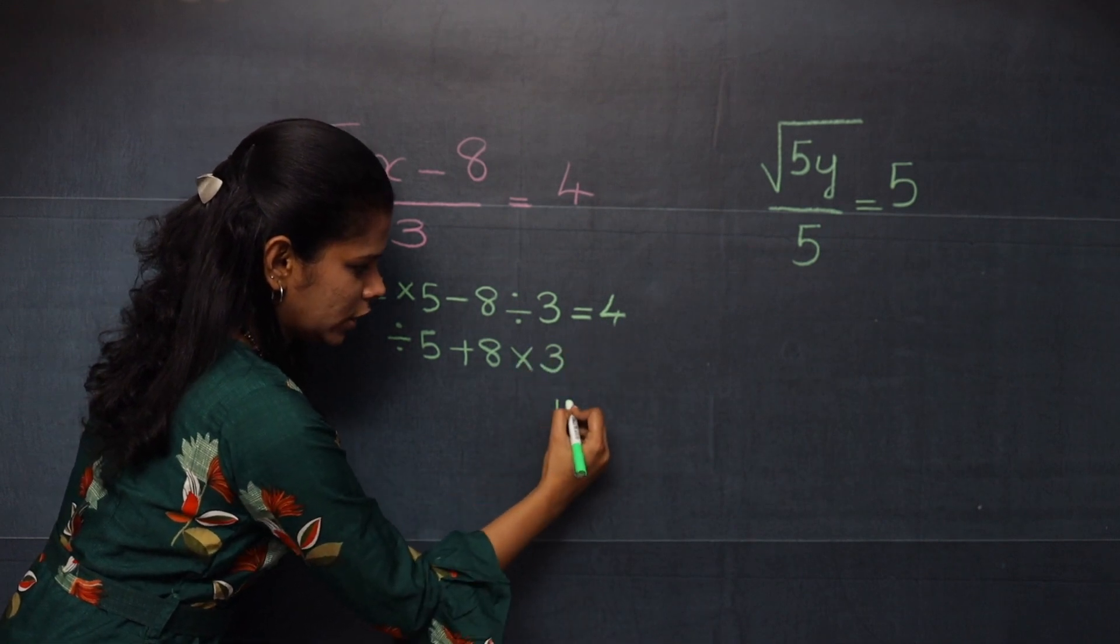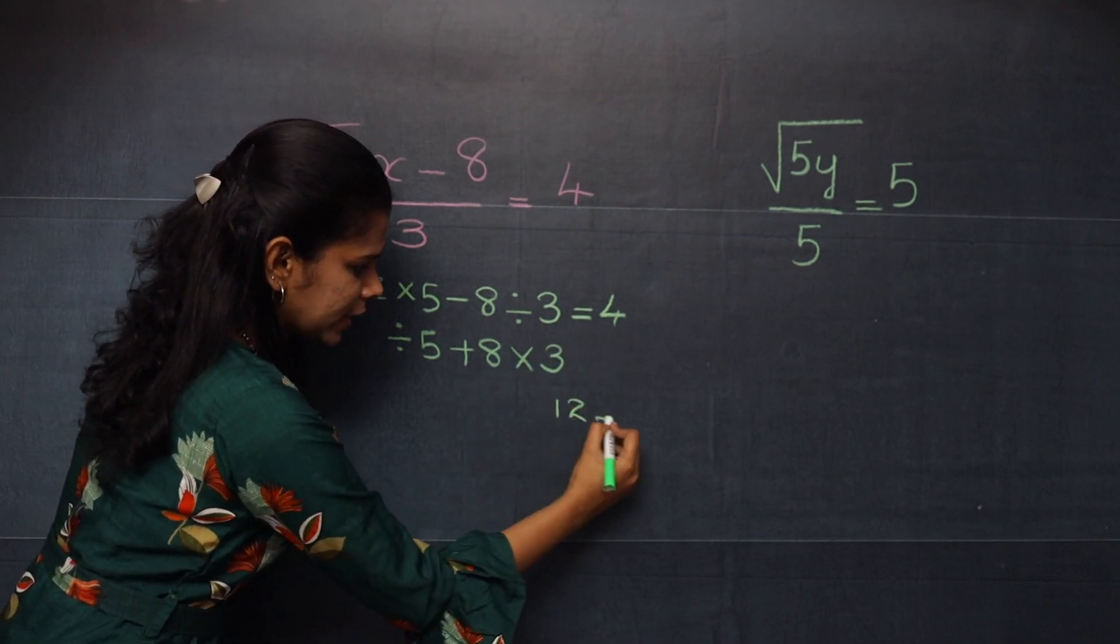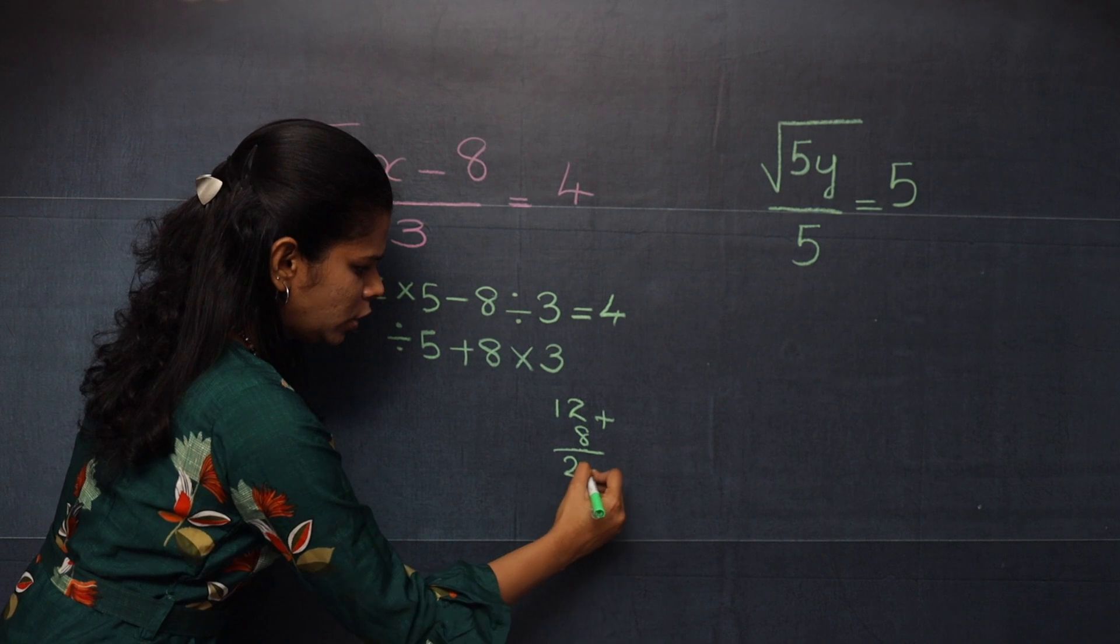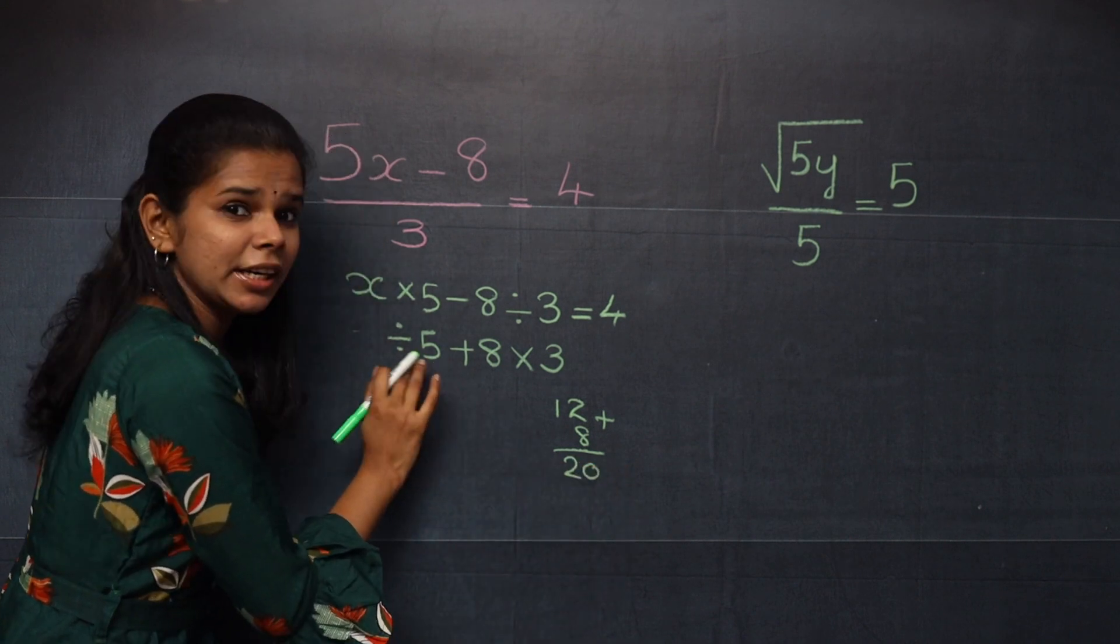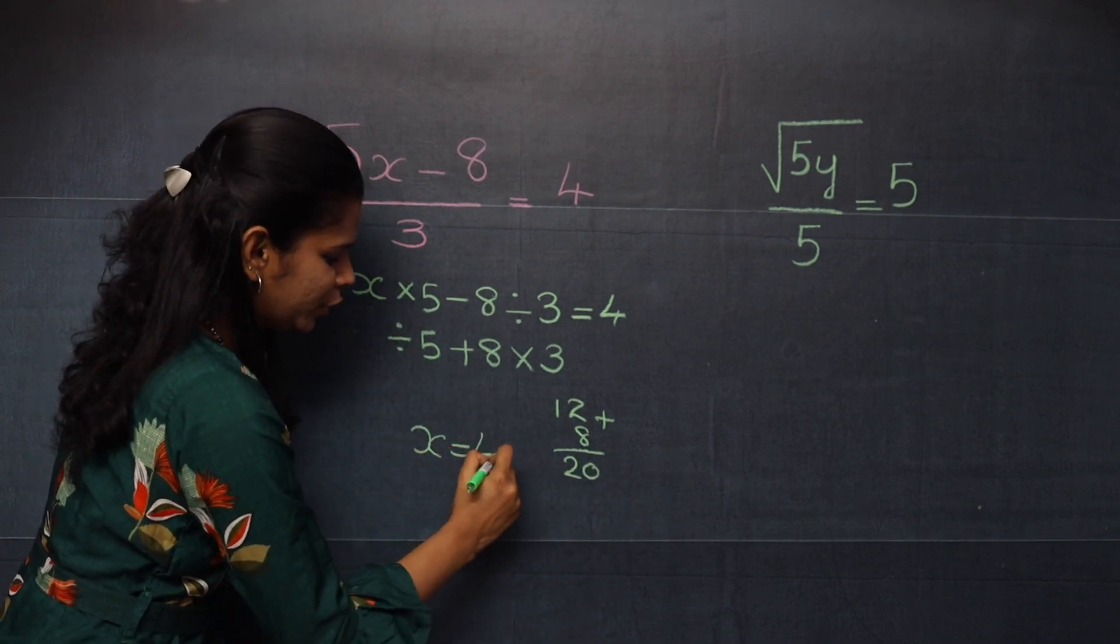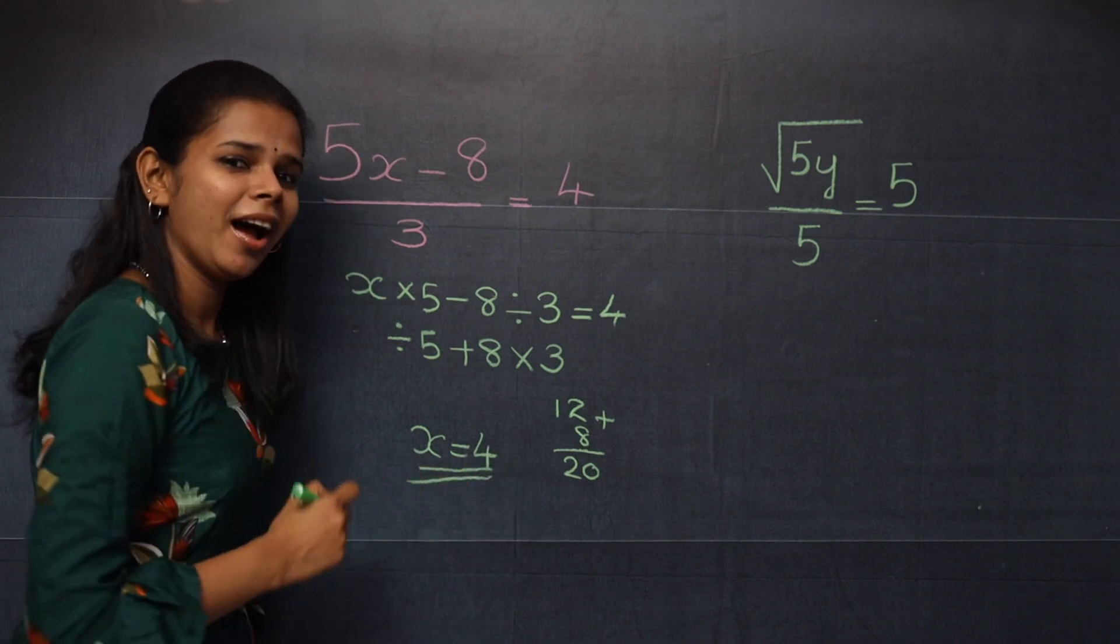4 into 3, it is 12. Plus 8, it is 20. So 20 divided by 5. So h equal to 4 will be the answer.